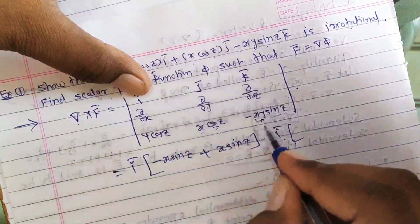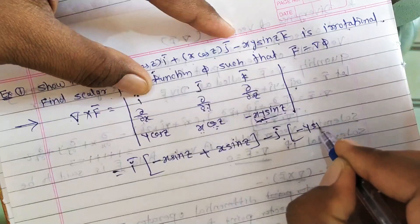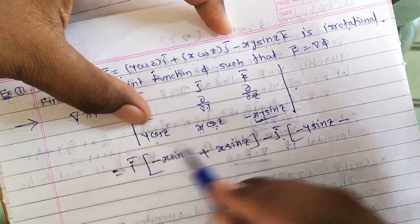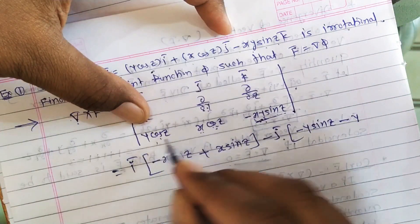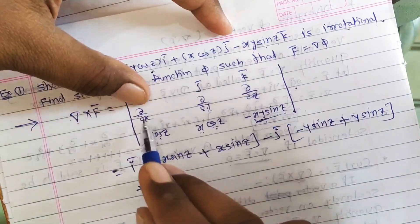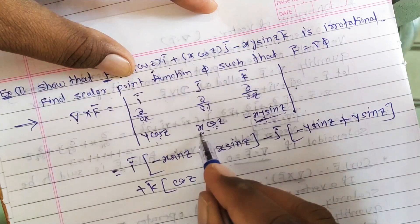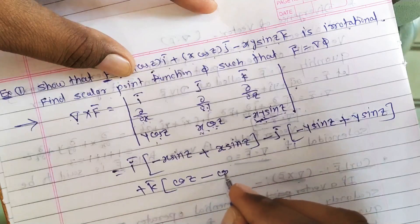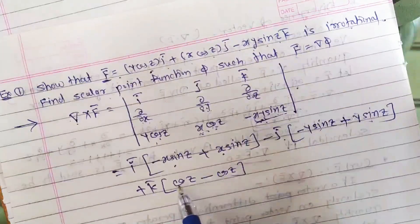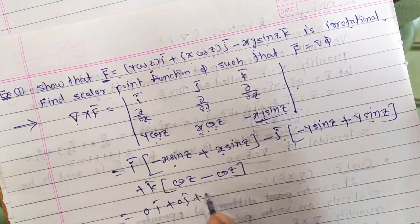Then minus ĵ times [∂/∂x(−xy·sin(z)) − ∂/∂z(y·cos(z))]. Derivative of −xy·sin(z) with respect to x is −y·sin(z); derivative of y·cos(z) with respect to z is −y·sin(z). So the ĵ component is −y·sin(z) − (−y·sin(z)) = 0. Plus k̂ times [∂/∂x(x·cos(z)) − ∂/∂y(y·cos(z))] = cos(z) − cos(z) = 0. Each term cancels, so the answer is 0.